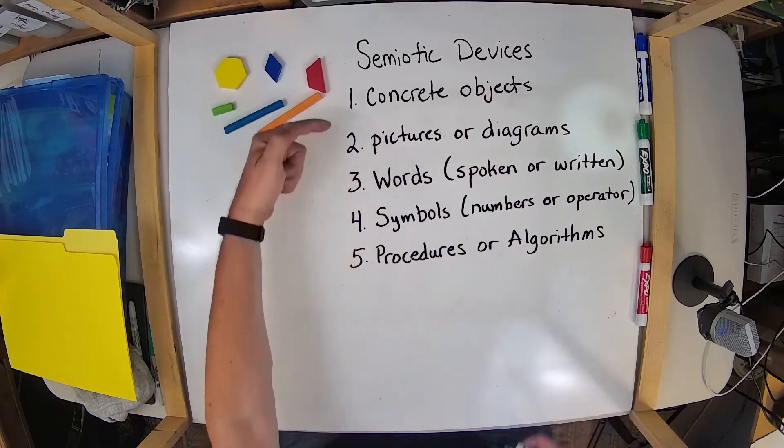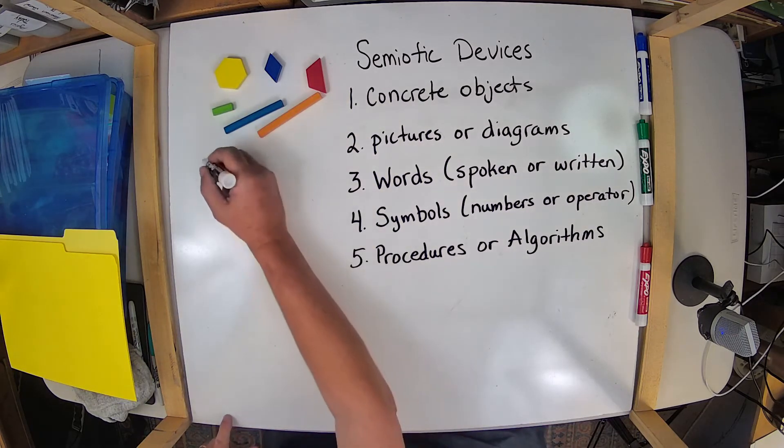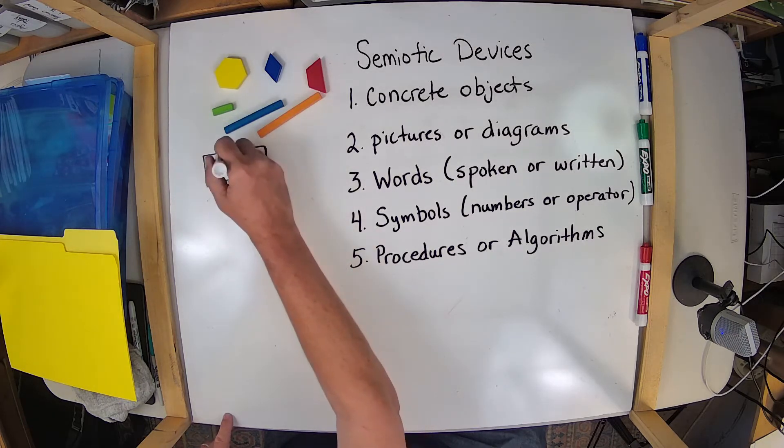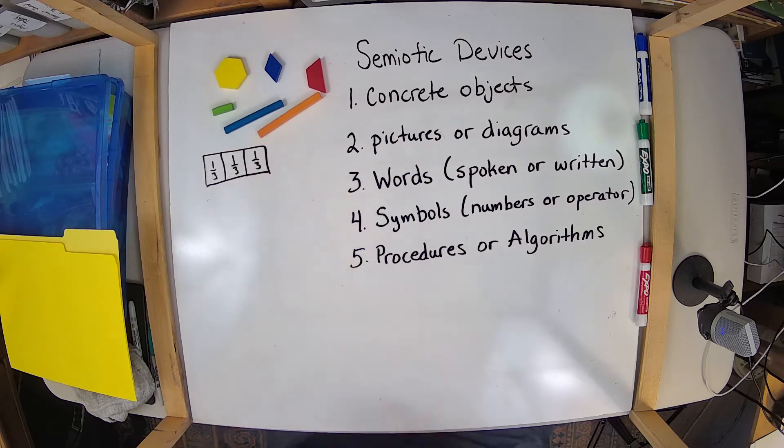The next thing that is a semiotic device, or that carries meaning, are pictures or diagrams. We're all very familiar with the kind of pictures that you might see something like this, where each one of these might represent one-third, and one-third, and one-third.